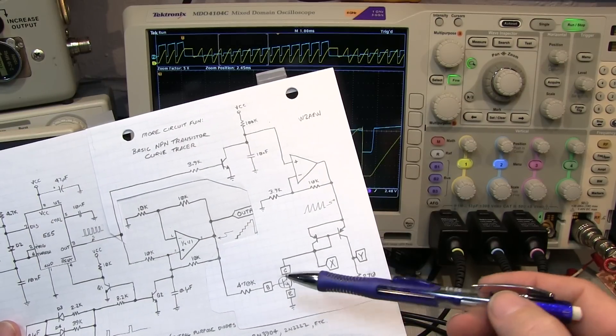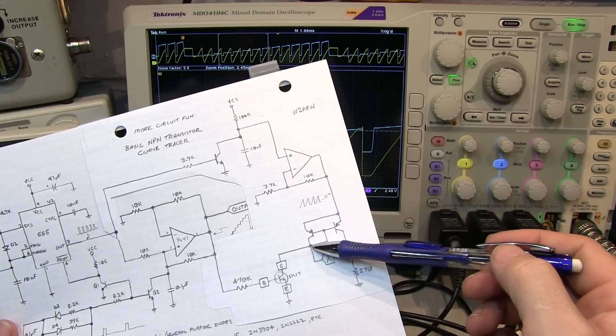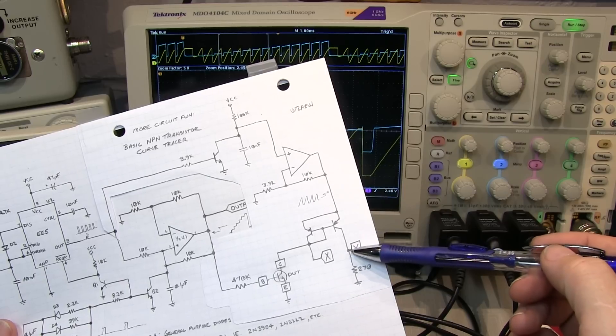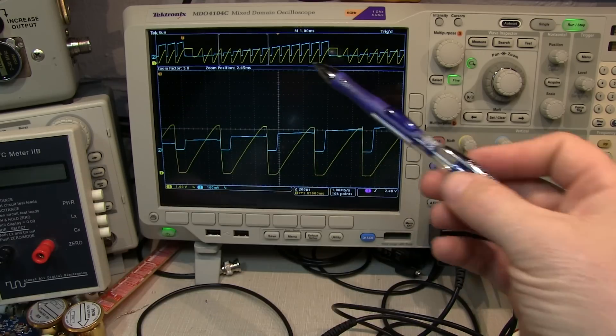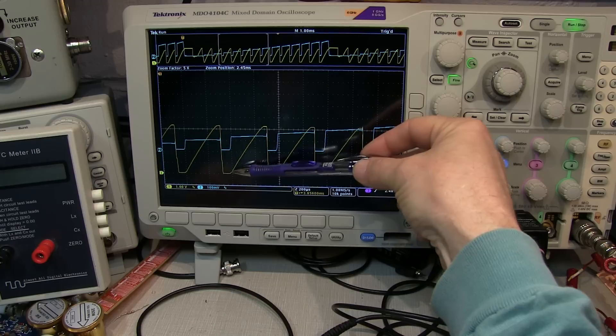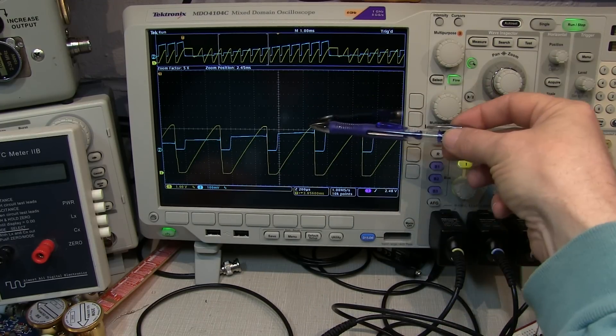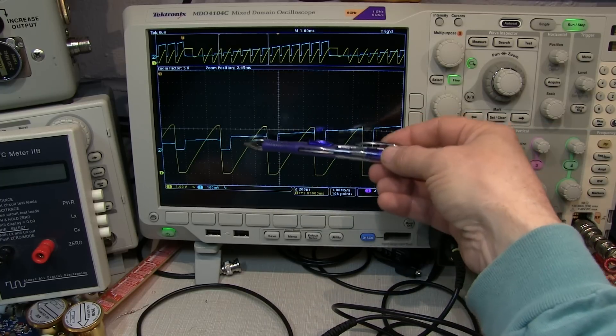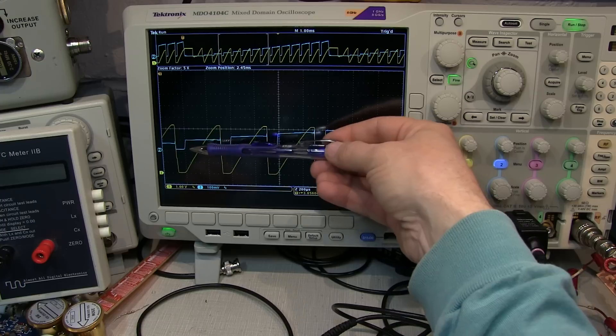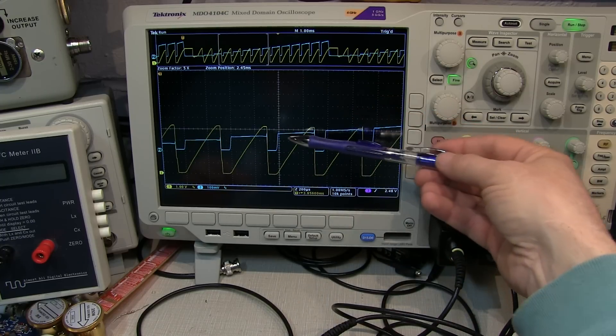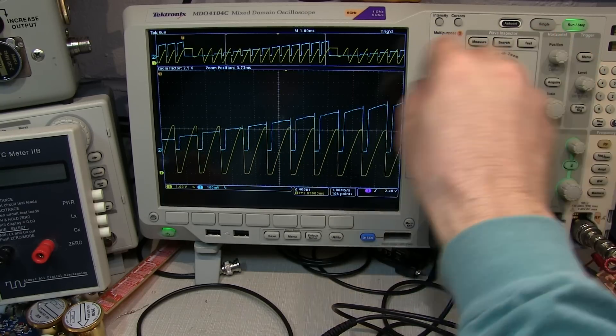Now we can look at these two plotted on channel 1 and channel 2, the voltage being applied to the collector and the resulting collector current. Each step will be at different steps of base current. This is the voltage being applied to the collector, so that's ramping up and then resetting, ramping up again, resetting. After each of these steps, the base current is being slightly increased. So the collector current that's flowing is being increased with each step, and we can zoom through this and see how that process increases all the way up.